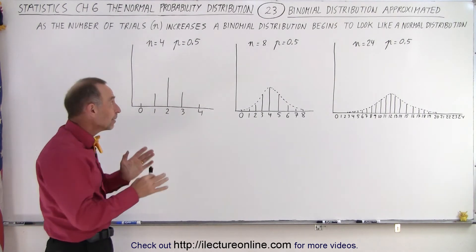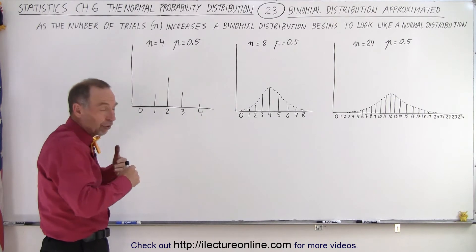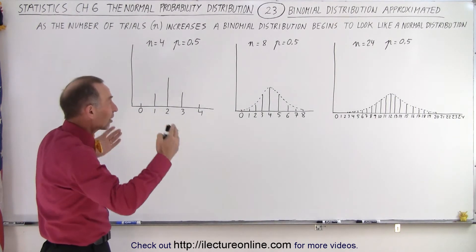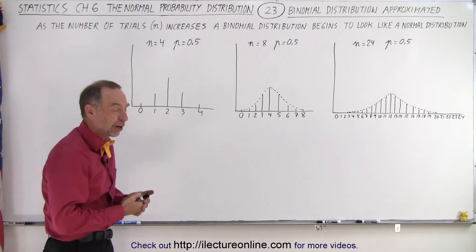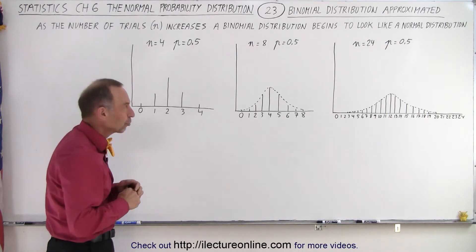To find the probability in a binomial distribution gets very tedious and difficult, especially when the numbers get large. When the number of trials becomes very large, we're dealing with very large numbers.